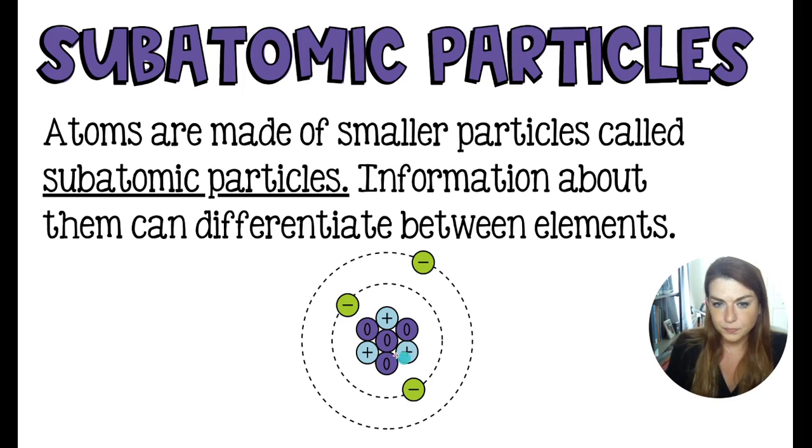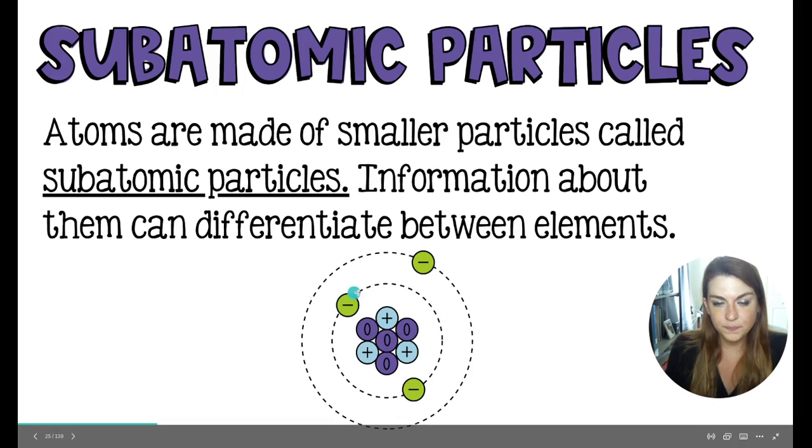So here we have a picture. We have a nucleus, just like Rutherford says that contains protons. And that is also what Rutherford said, that it was positive. We have some neutrons in there. You can see that the neutrons kind of squeeze between the protons, and that's on purpose. The purpose of the neutrons is to keep the positive protons from repelling each other. And then we have Bohr's energy levels where the electrons live.